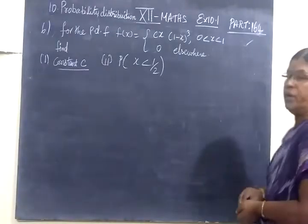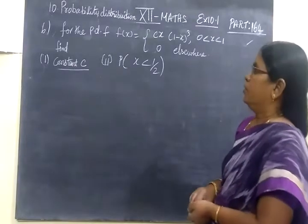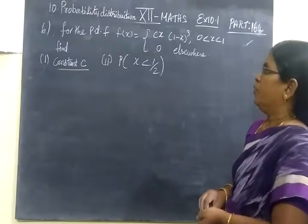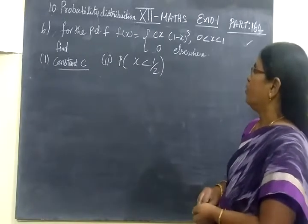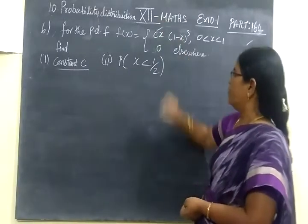So next we are finding path 164, sixth question. For the pdf function, we have to find the value of C. We have to find the value of B.